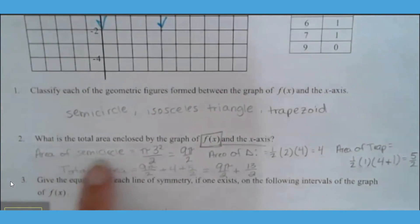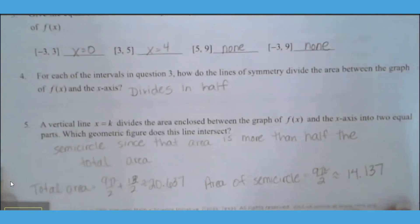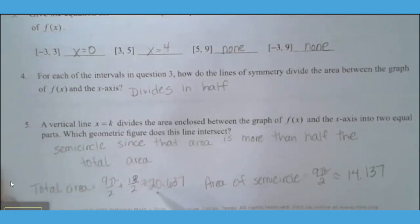So if we are looking at what our areas are equal to, the area of the semicircle is 9 pi over 2, which is hard for me to understand because of the pi sometimes when I am trying to determine what half is. So if we allow our students to go in and determine what half of that is, the total area 9 pi over 2 plus 13 over 2 is approximately 20.637. The area of the semicircle is approximately 14.137. So the semicircle is already more than half of the total area. So wherever this line is, that will occur somewhere within the semicircle.